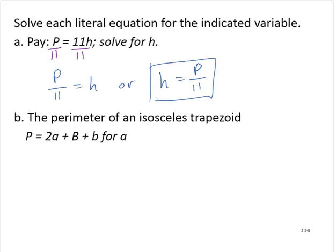We're told about the perimeter of an isosceles trapezoid. That's equal to P equals 2a plus capital B plus lowercase b, and we're asked to solve for a.